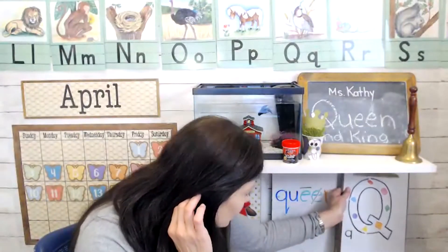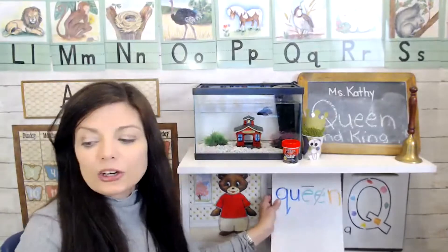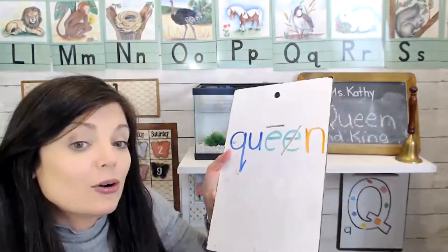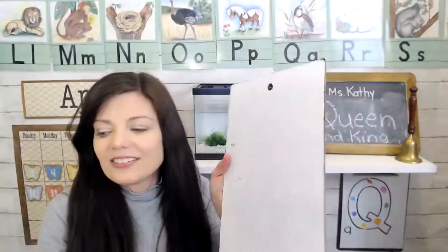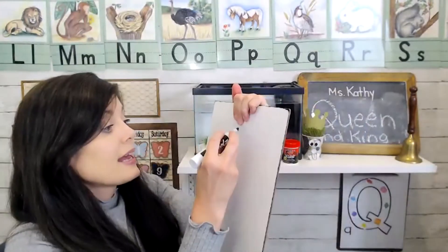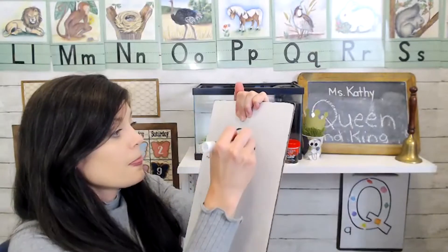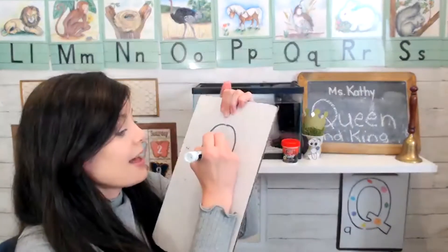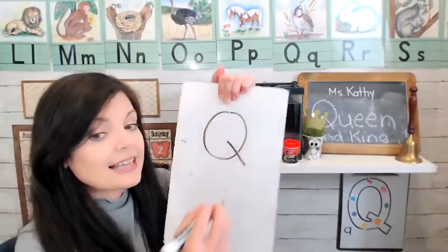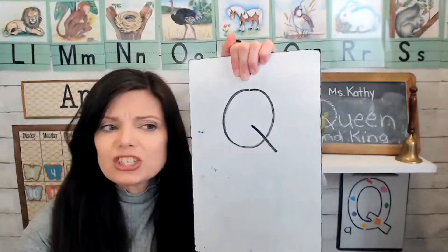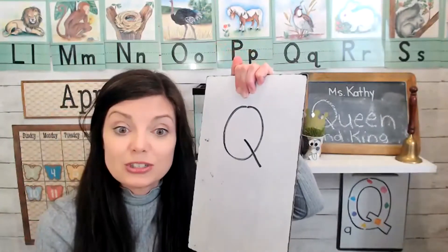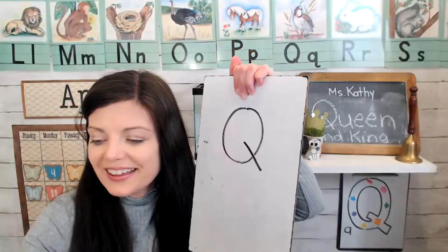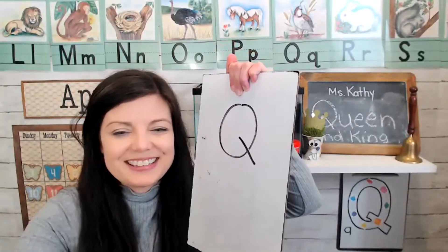We learned how to write the letter Q. Letter Q is just a letter O with a line. So all you have to do is first make an O, and then make a line that slides down. And in my online classes today, we actually turned this into a queen. Would you like to see how we did that?